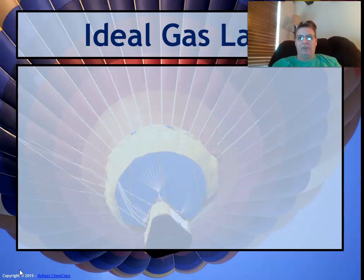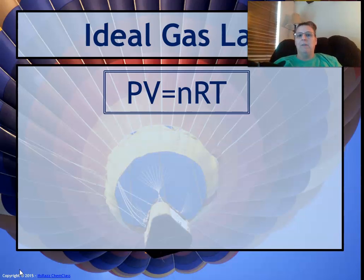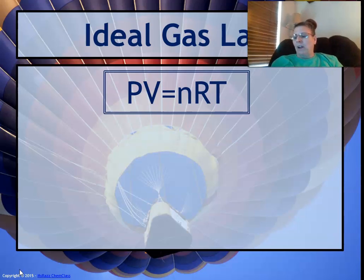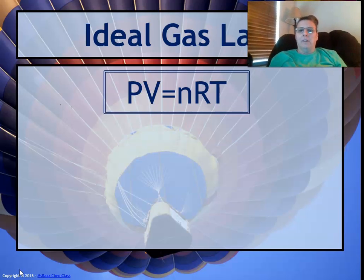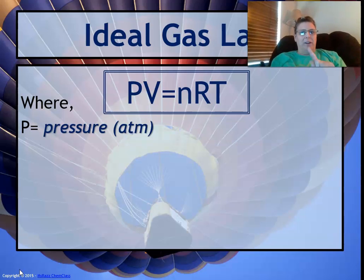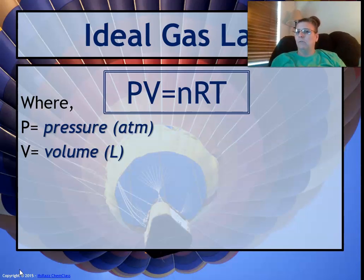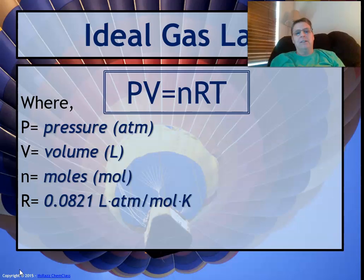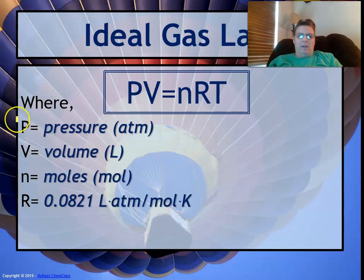The ideal gas law is a law that relates the amount of gas in moles to the volume it will occupy at a particular temperature and pressure. Ideal gas law is PV = NRT. If you remember from the foldable, N stands for moles, R is a gas constant, and I believe I gave you all the gas constants. P is pressure, V is volume, N is moles, R is the constant.